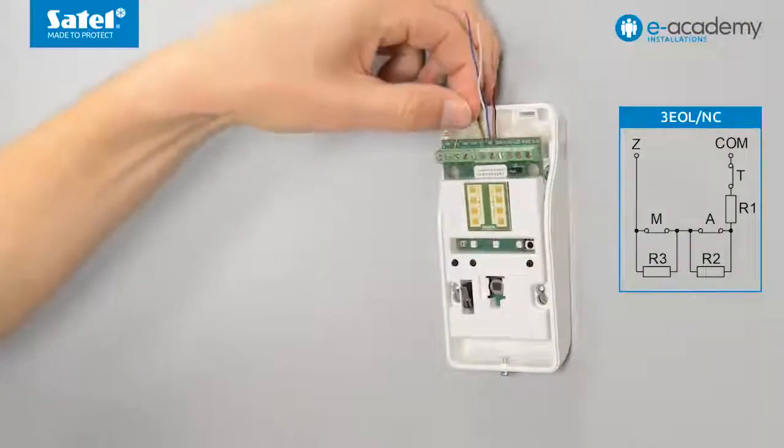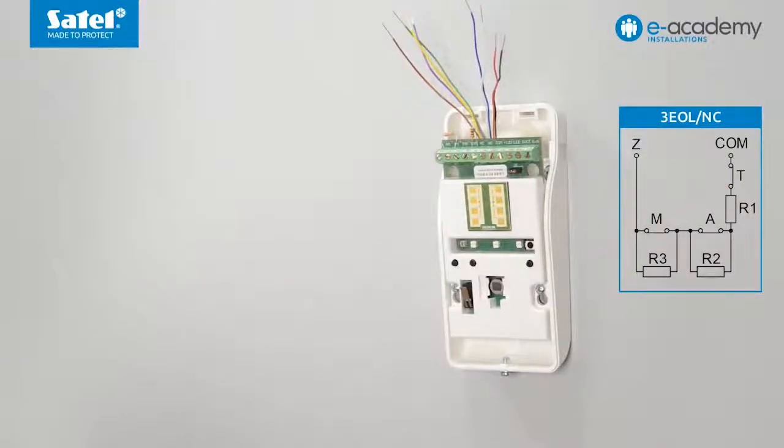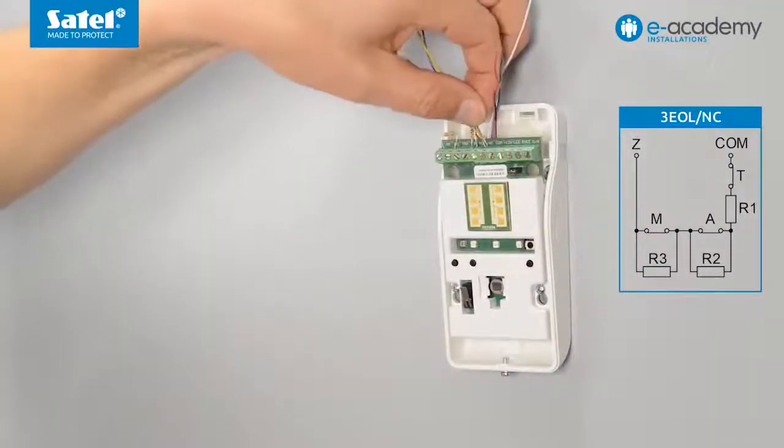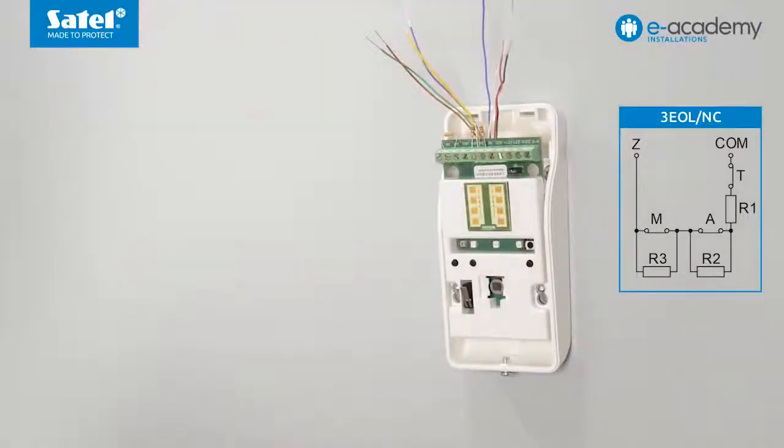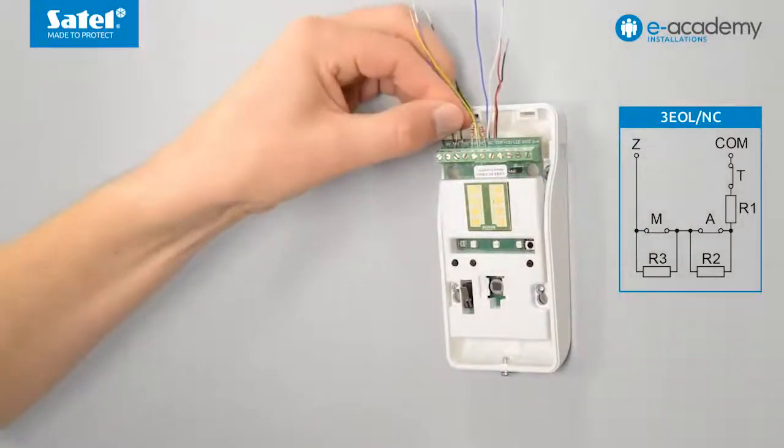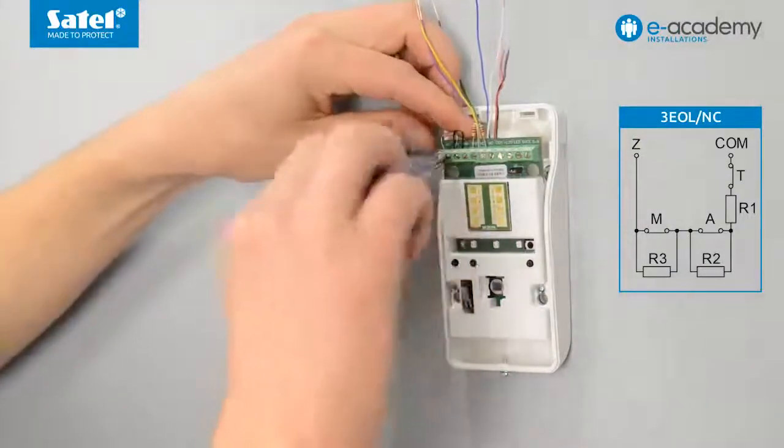Connect the R1 1.1 kilohm resistor between the tamper terminal and the alarm terminal. Connect the R2 1.1 kilohm resistor between the alarm terminals and the R2 1.2 kilohm resistor between the anti-masking terminal and the tamper terminal.